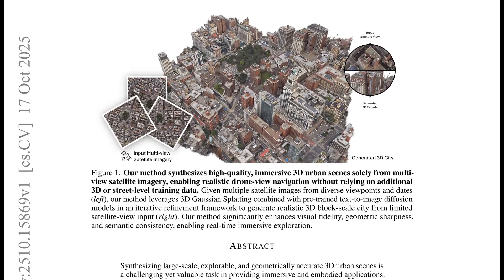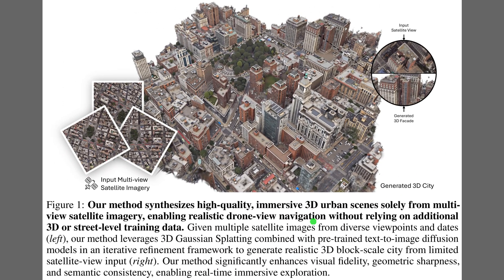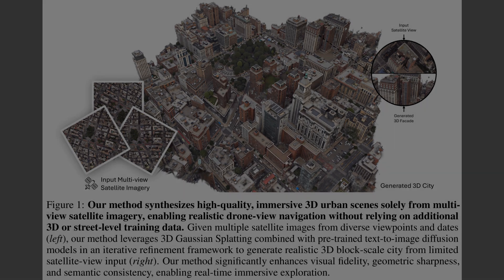Figure 1 presents the core idea: satellite photos go in, an explorable 3D city comes out, suitable for drone-style navigation. The left panel shows multi-view satellite inputs collected across dates and viewpoints. The large central render depicts the generated city block with sharper geometry and textures. The round inset on the right contrasts a satellite patch with the synthesized facade, which looks consistent because diffusion editing steers textures while 3D Gaussian splatting preserves structure.